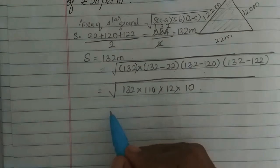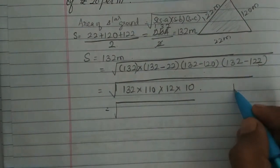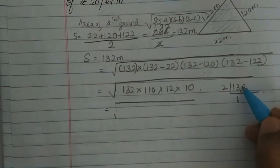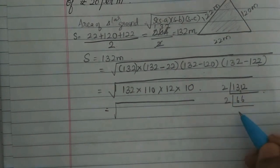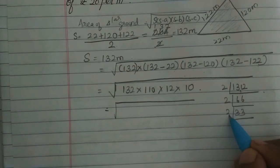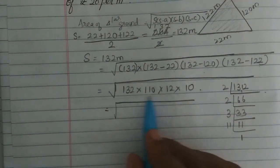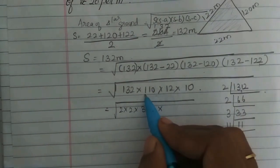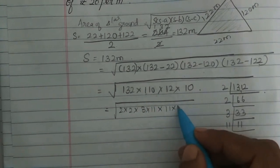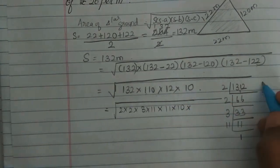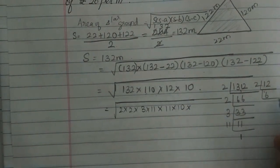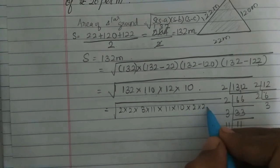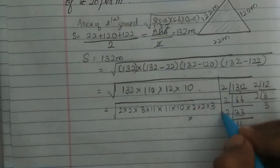Now factorizing these numbers: 132 equals 2×2×3×11, then 110 equals 11×10, then 12 equals 2×2×3, and 10. So we have 2×2×3×11 × 11×10 × 2×2×3 × 10.